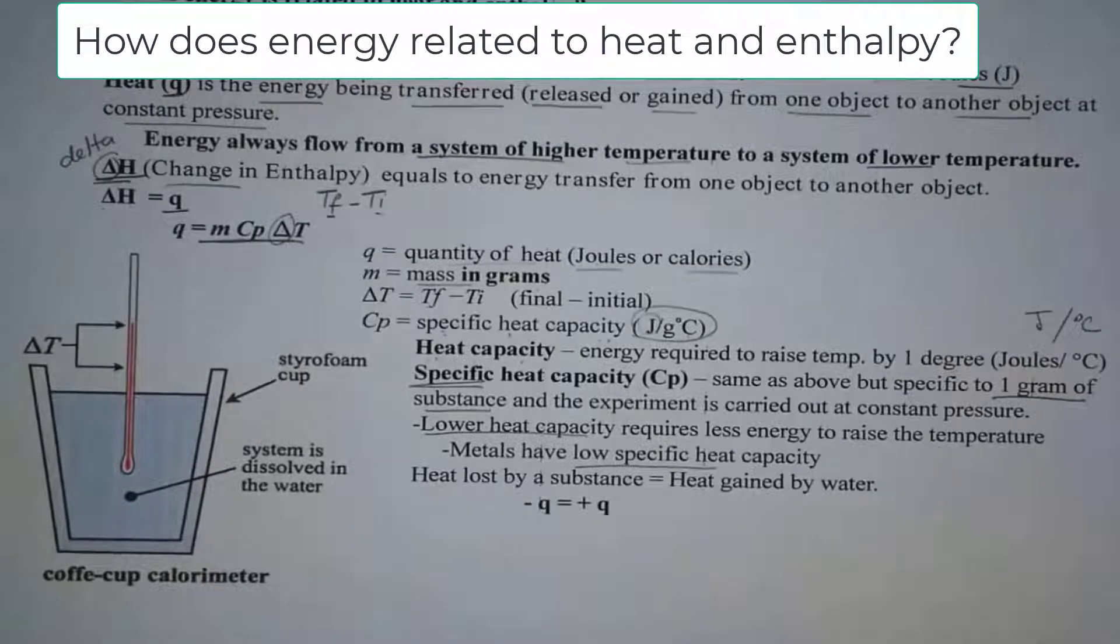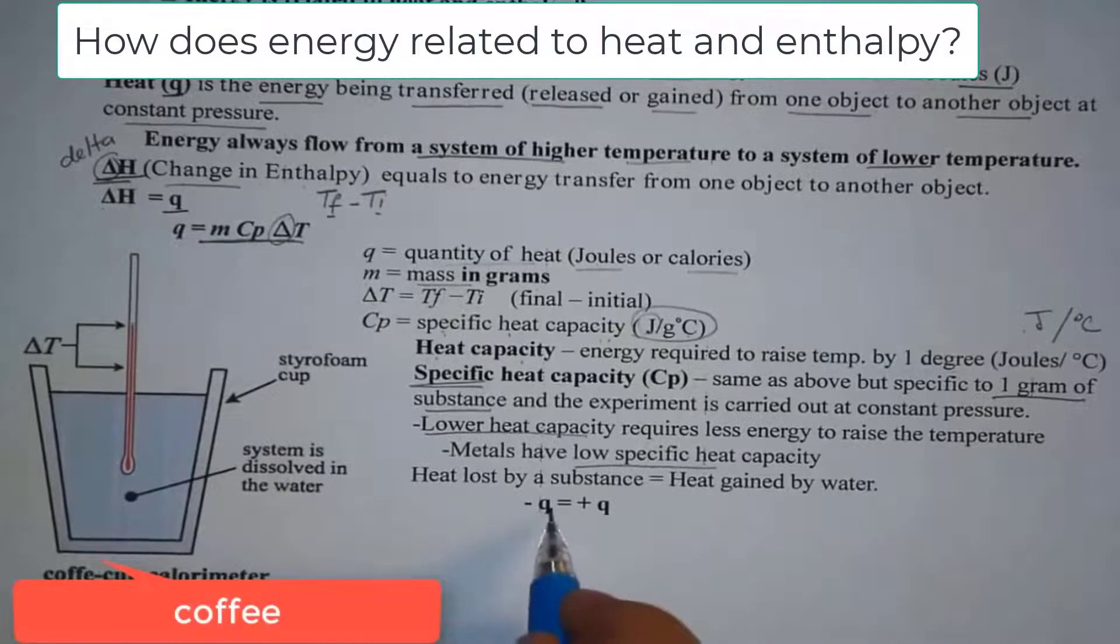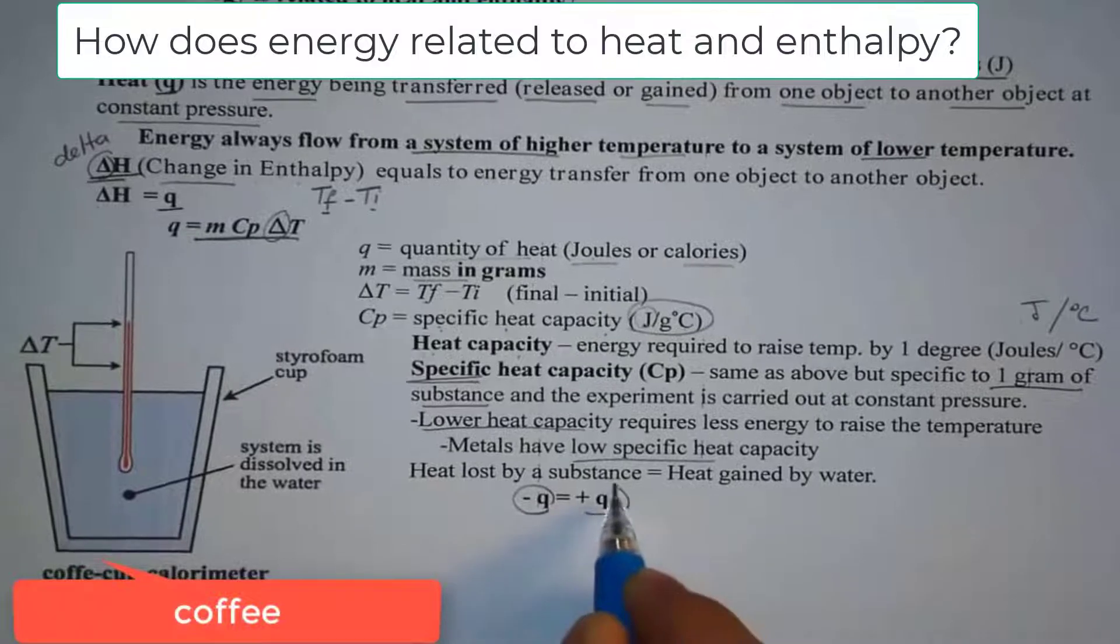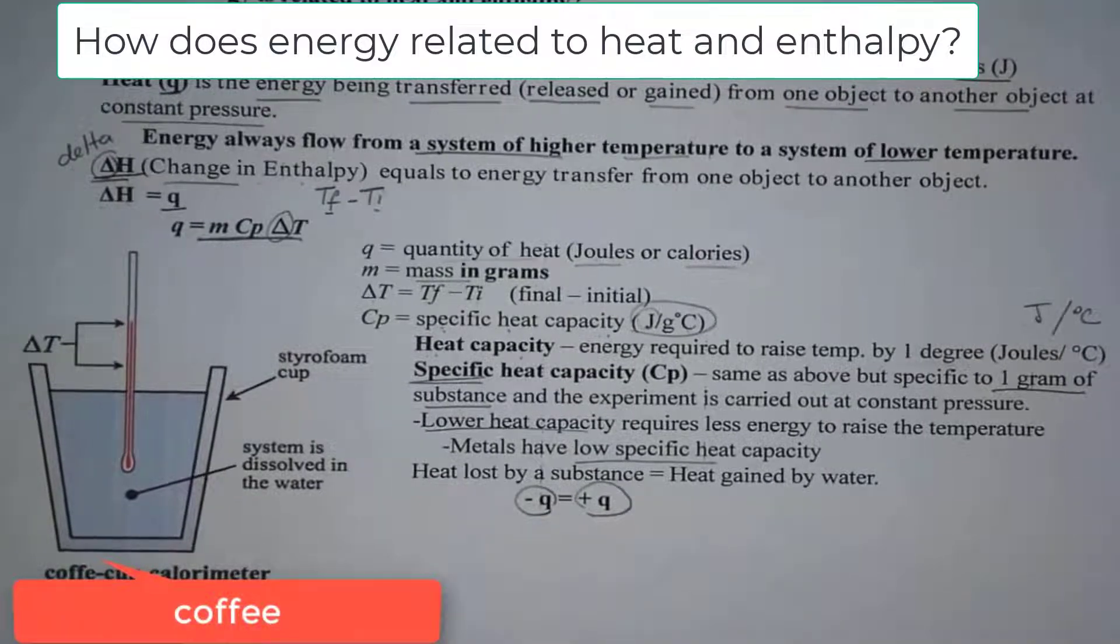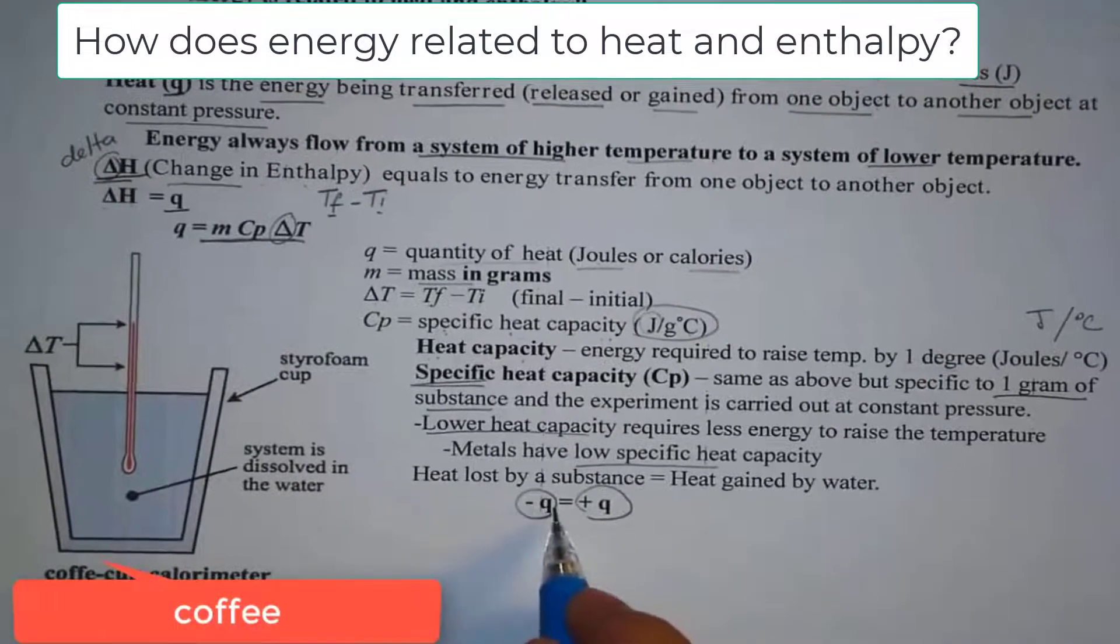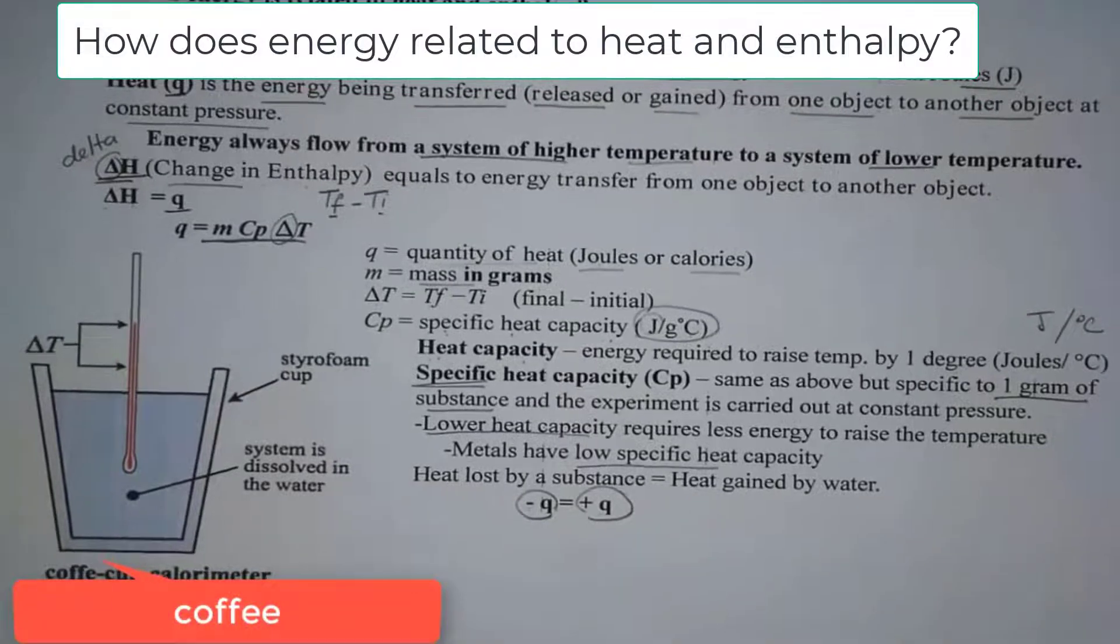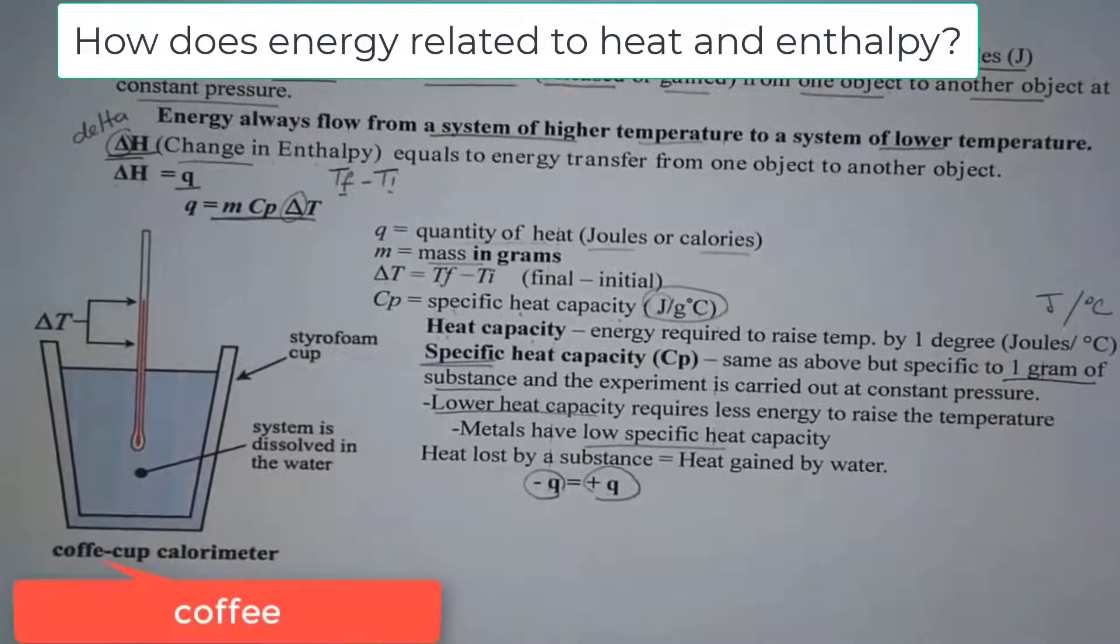You already know that the amount of energy in this universe is constant. What does that mean? That energy is neither created nor destroyed. Matter is neither created nor destroyed. So if that's the case, the amount of energy being lost should be equal to the amount of energy being gained. That's why we have negative Q equal to positive Q. So that's the concept behind it.